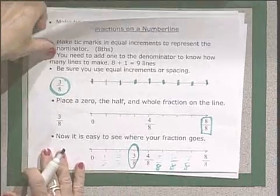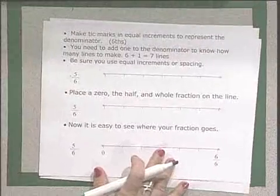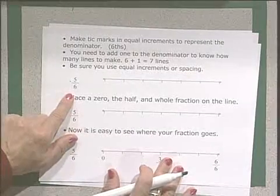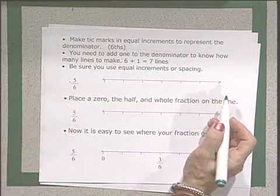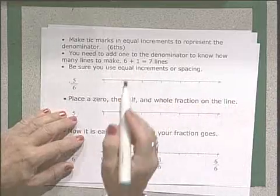So it's a very simple procedure. Let's look at another one. If we're going to look at sixths, we know we need six equal spaces. We know we need seven, add one, tick marks.